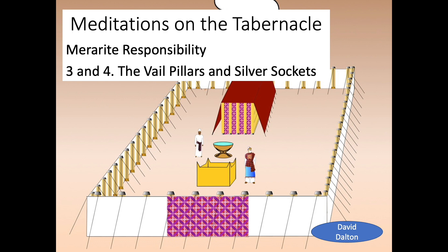Today we're going to combine two of their areas of responsibility. We're going to look at firstly the veil pillars, and secondly the silver sockets that were both under those veil pillars and under the boards that went around the holy place and the most holy place.